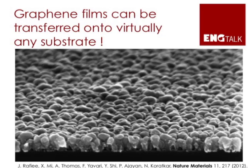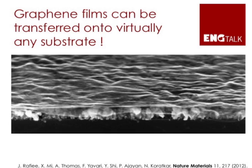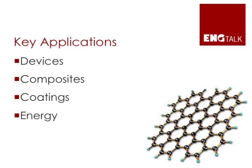We can also transfer graphene onto rough surfaces. For example, onto copper nano rods where the surface is very rough — and as shown on the next slide, a single layer graphene drape, like a nano blanket, can be transferred onto that surface. So, I can make graphene top-down or bottom-up, transfer it onto any substrate, and contact it. In my lab, we're looking at four applications: devices, composites, coatings, and energy.